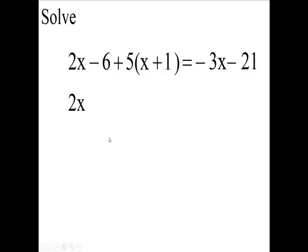So we have our 2x minus 6, and if you distribute the 5 onto the x and the 5 times the 1, then bring down the equals and the next two terms.